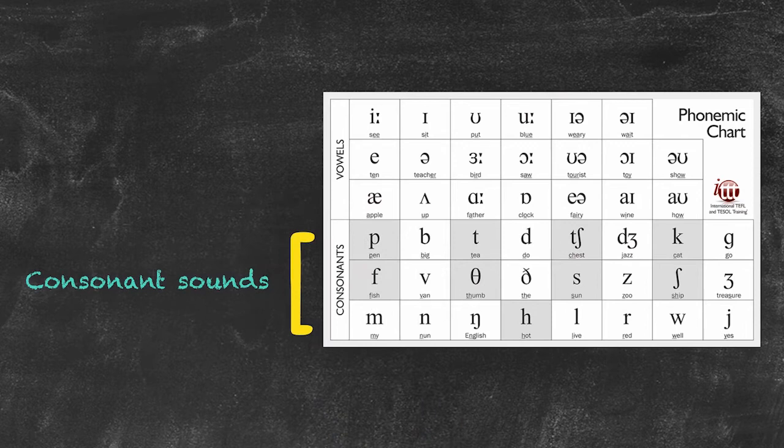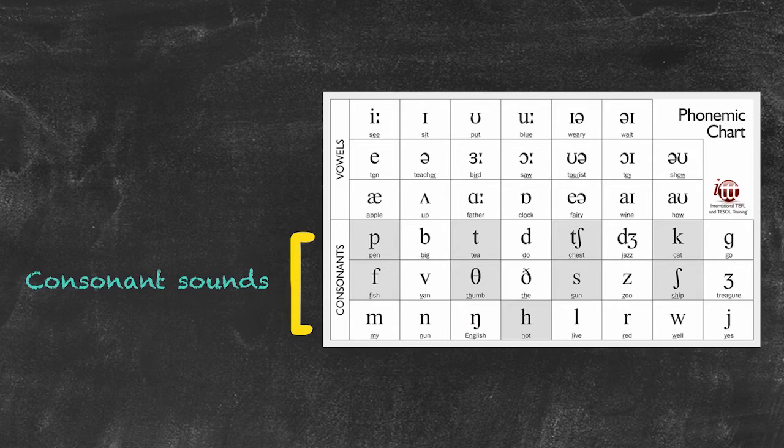Each symbol represents one sound, whereas in the Roman alphabet, one consonant letter could produce a few different sounds, such as in the case with a C. It can be a hard C, as in cake, or it can be a soft C, as in nice.